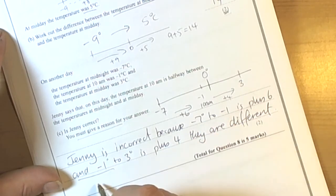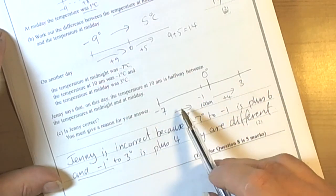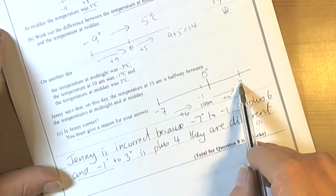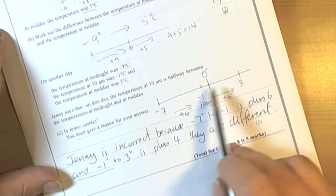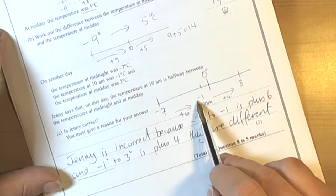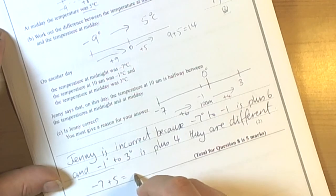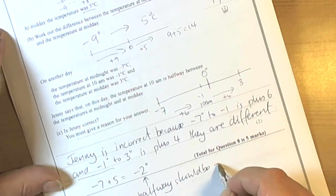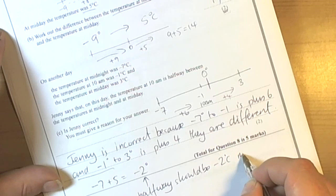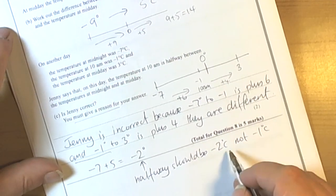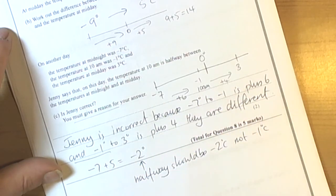We could of course have found out what is exactly between them. And if we look between minus 7 and 3, you have to add 10 to get from there. So halfway would be 5 degrees further along. Half of 10 is 5. Minus 7 plus 5 equals minus 2 degrees. So we could have said that the halfway should be negative 2, not negative 1. That would also be a correct answer as well. So there are two different ways of doing that one.